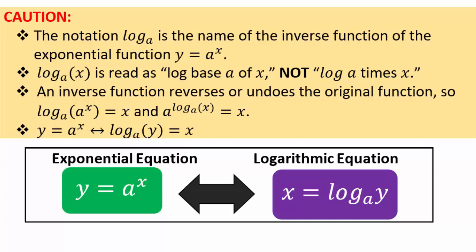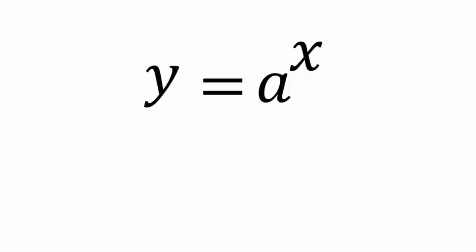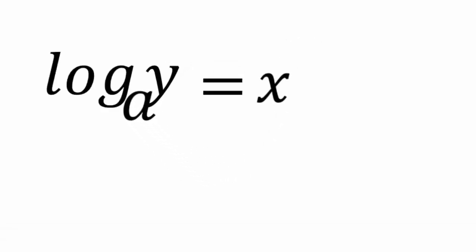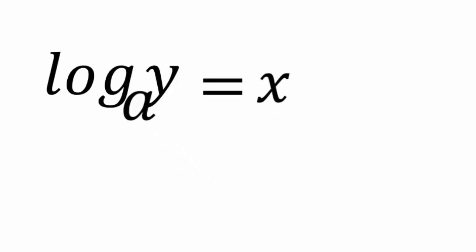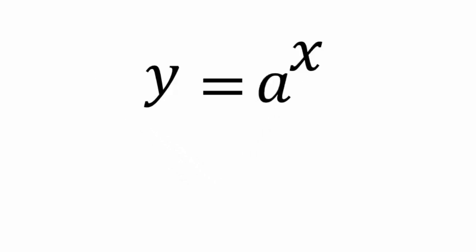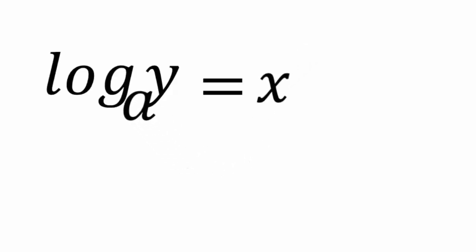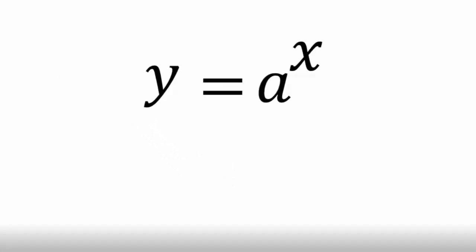It's important to be able to go back and forth between exponential and logarithmic equations. The exponential equation y = aˣ has the logarithmic equivalent form x = log base a of y. When you eliminate the exponential, the left-hand side inherits log base a; when you eliminate log base a from the left-hand side, you inherit aˣ on the other side.